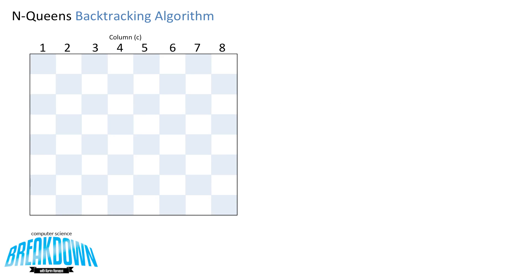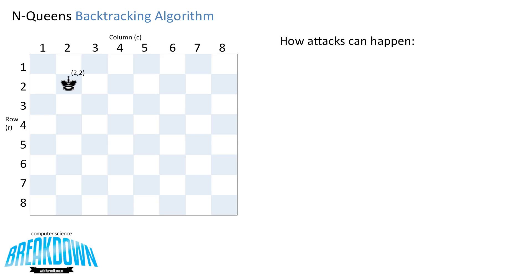Other optimal solutions do exist, and they include the rotations and the mirrored flips of this board. Now let's look at an 8x8 board and define how attacks can happen. If we have a Queen at position 2,2 and another Queen at position 2,6, these Queens can attack each other because they share the same row. So if row on Queen 1 is equal to row on Queen 2, then they are not safe.